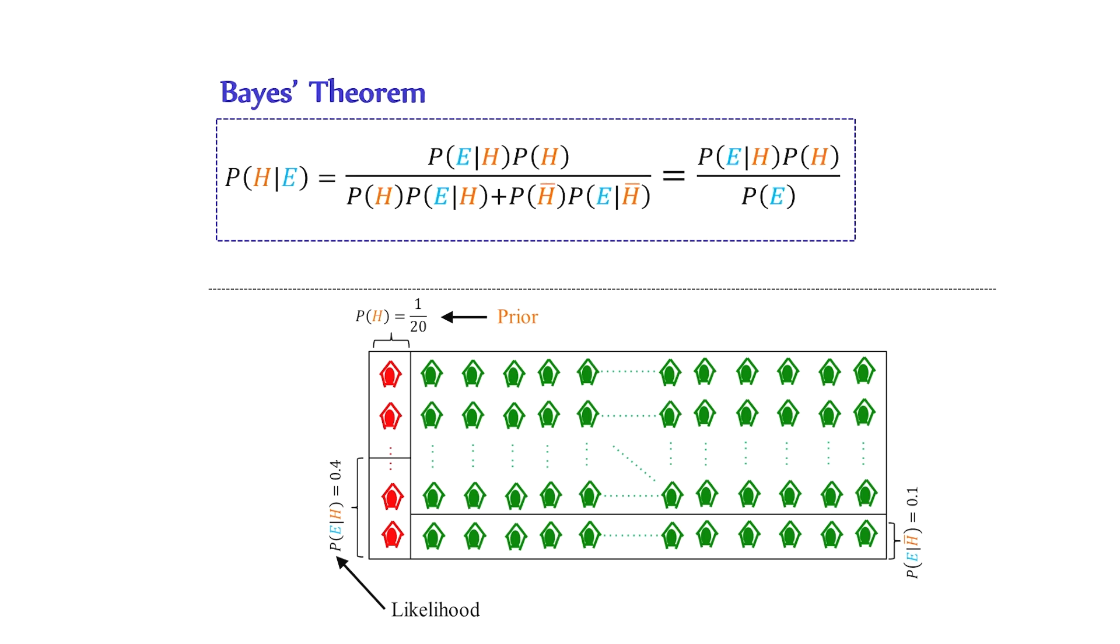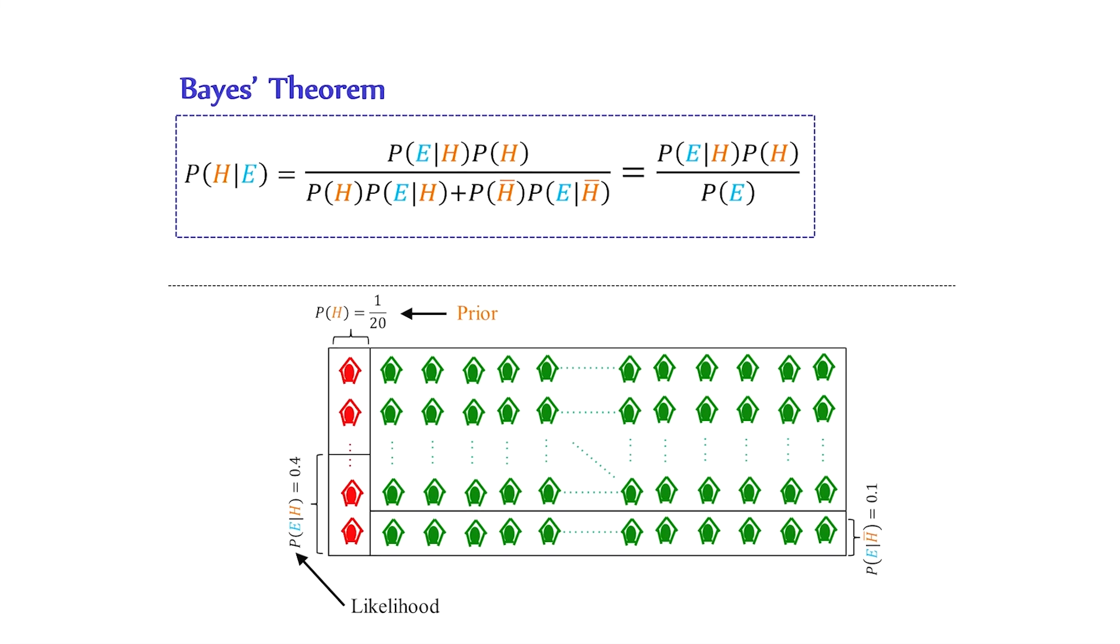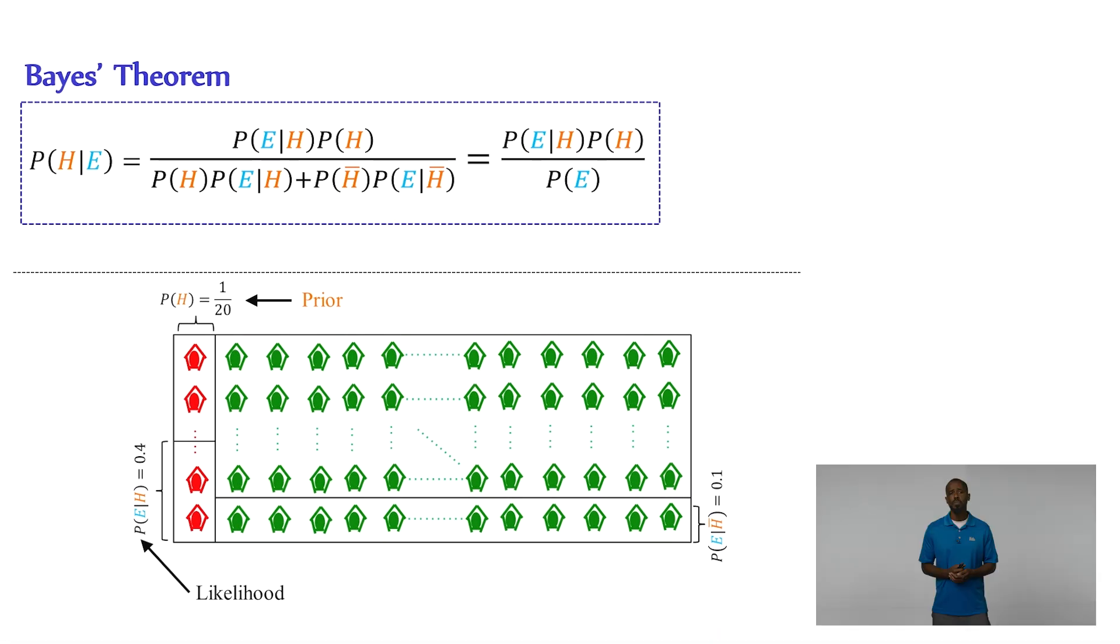Also, more often you would see the denominator of the right-hand side as the probability of E, or the total probability of seeing the evidence. In our problem, that would be the fraction of collapsed buildings in the sample space. However, when applying Bayes theorem in practice to calculate the denominator, you almost always have to break it down into the part corresponding to where the hypothesis is true and the part where it is not.